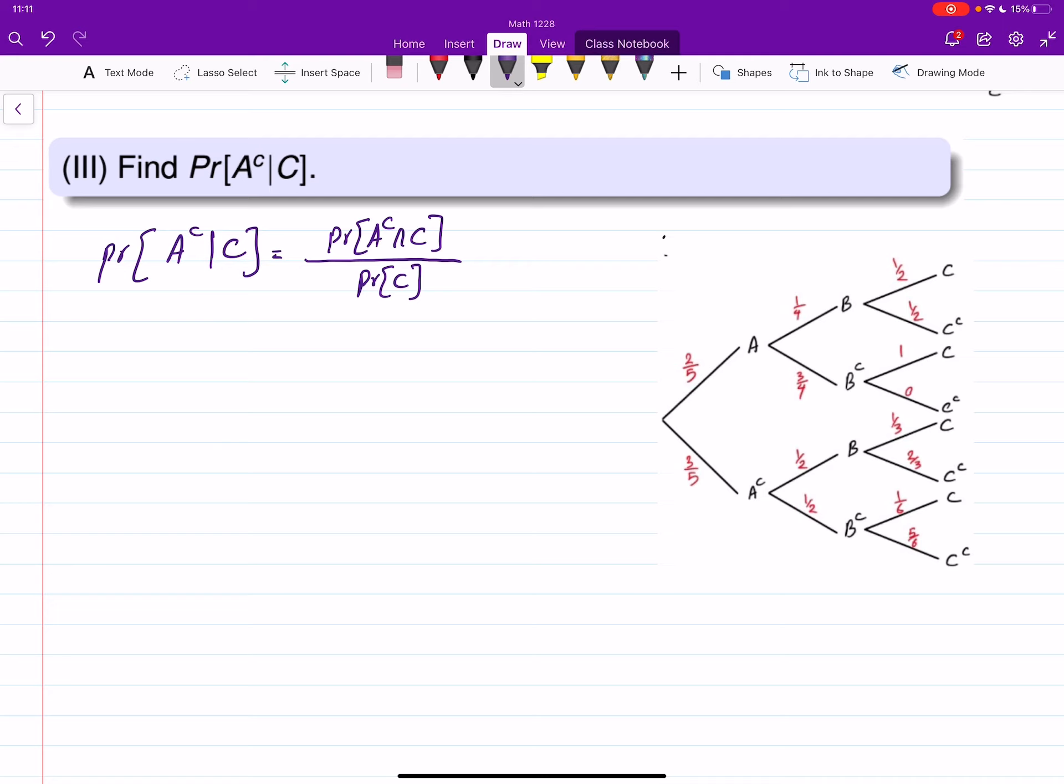Probability of C we already computed in part B. So there were 1, 2, 3, and 4 paths ending to C. How about probability of A complement and C? There are 1 and 2 of these guys which include C, both C and A complement. So if I want to write these in the numerator, I will have 1 third times 1 half times 3 over 5 plus 1 over 6 times 1 over 2 times 3 over 5.